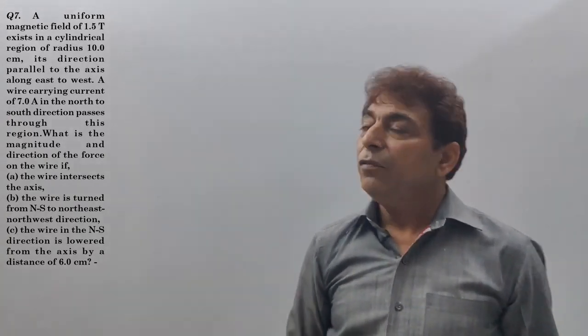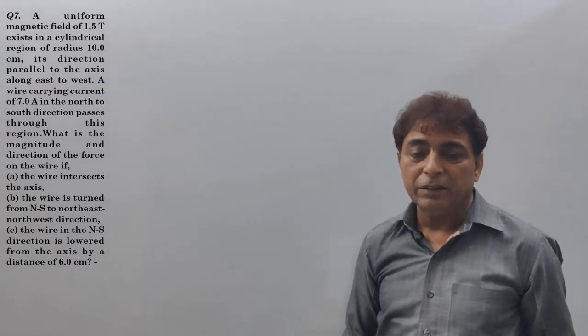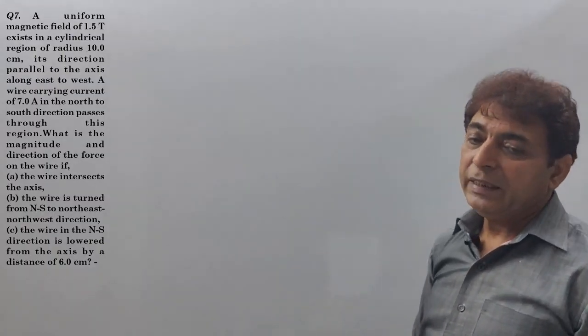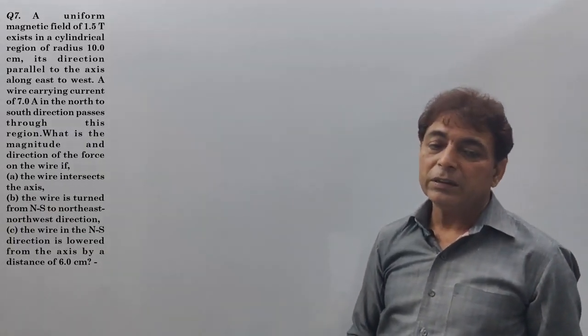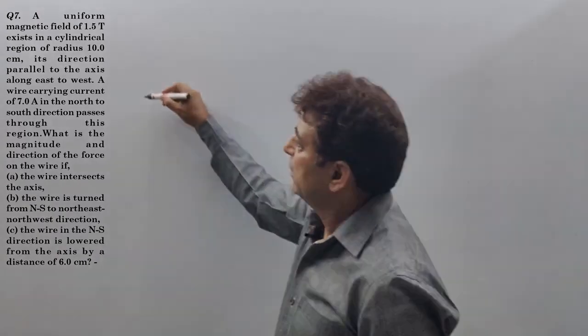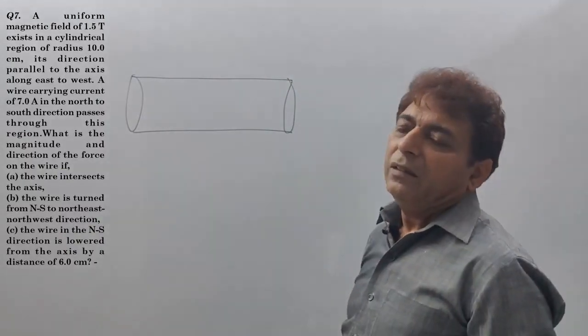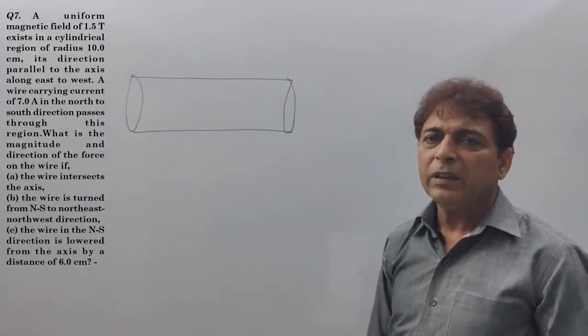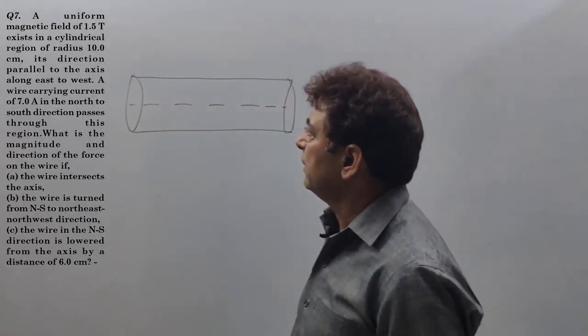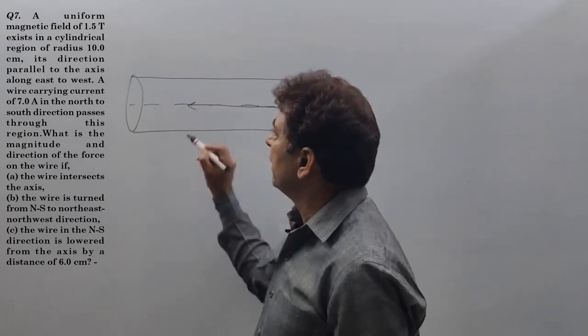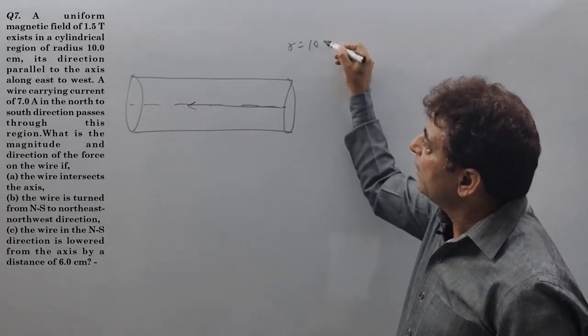It says a uniform magnetic field of 1.5 tesla exists in a cylindrical region of radius 10 cm, its direction parallel to the axis along east to west. A cylindrical region. Imagine this is the axis along magnetic field radius 10 cm.